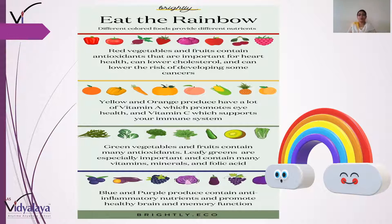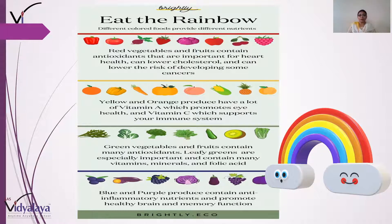Yaani agar lal rang ke phal aur sabzi aap khate hain, toh isse antioxidants bante hain jo bhoat zaroori hain heart ki health ke liye. Aur iske saath cholesterol ka level low hota hai, aur cancer hone ka risk bhi kam hota hai. Toh lal aur laali rang ke jo phal aur vegetables hain, woh aap khoob khaiye. Yellow and orange produce have a lot of vitamin A, which promotes eye health, and vitamin C, which supports your immune system — yaani aankhon ki health aur immune system strong hota hai.